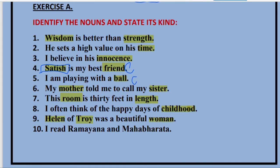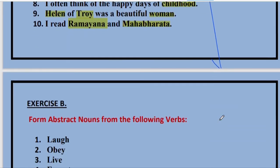Coming to sentence number ten: 'I read Ramayana and Mahabharata.' This is very easy. Ramayana and Mahabharata — both of them are epics. If we had said 'I read epics,' then 'epic' would be a common noun. But we are talking in particular — Ramayana and Mahabharata — so both of them are proper nouns. I guess Exercise A is very clear. Please tell me in the comment section how much you have scored. We will then move to Exercise B.